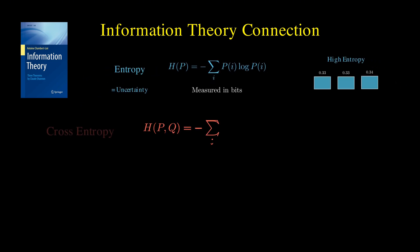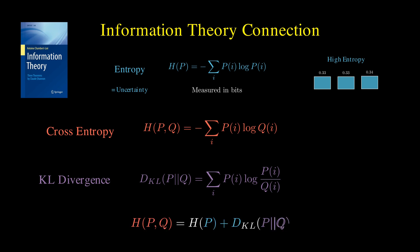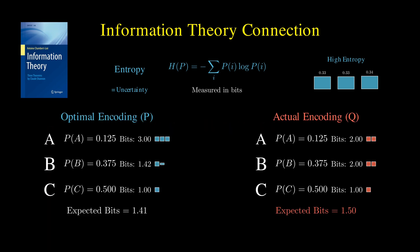Cross-entropy builds on this, measuring how many bits you need if you used your prediction to encode events from the true distribution. And the KL divergence measures the extra bits wasted due to using the wrong distribution. And they are related by the following formula. So cross-entropy equals the entropy of the true distribution plus the wasted bits from using your prediction.